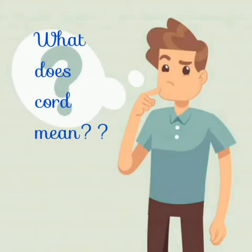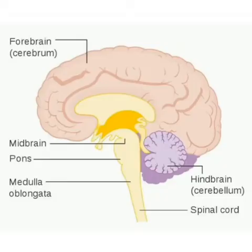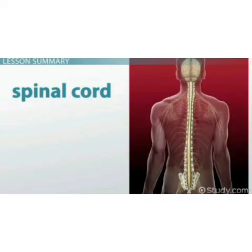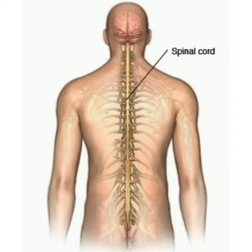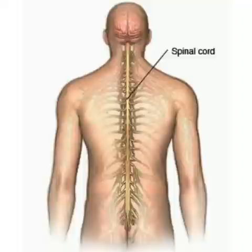What does cord mean? Medulla oblongata runs down through the backbone to its end. This continuation of medulla oblongata through the backbone is called spinal cord.